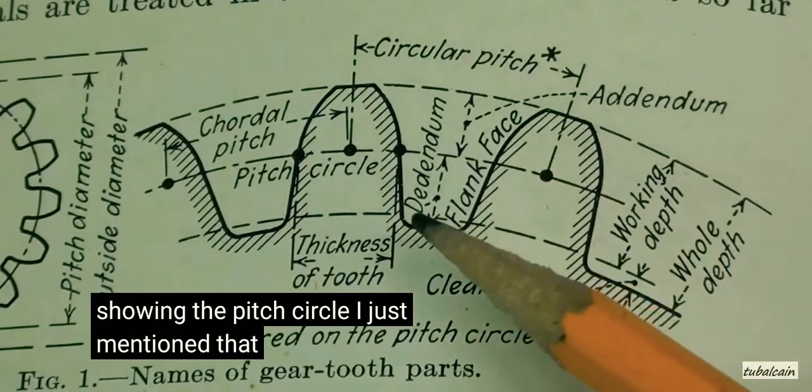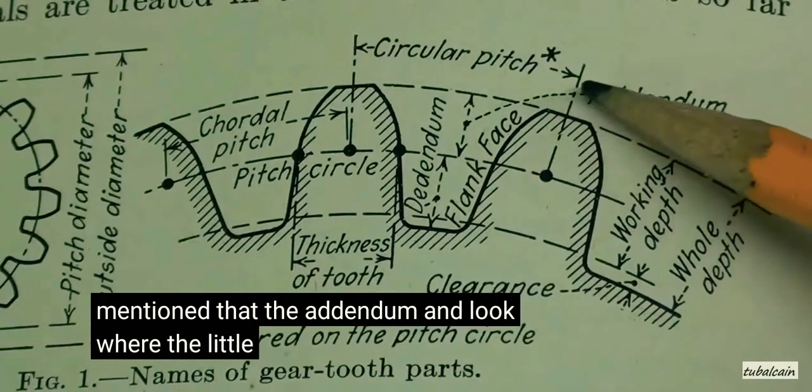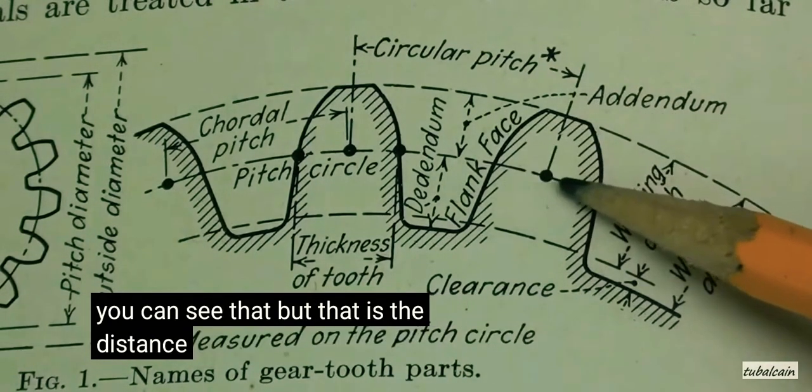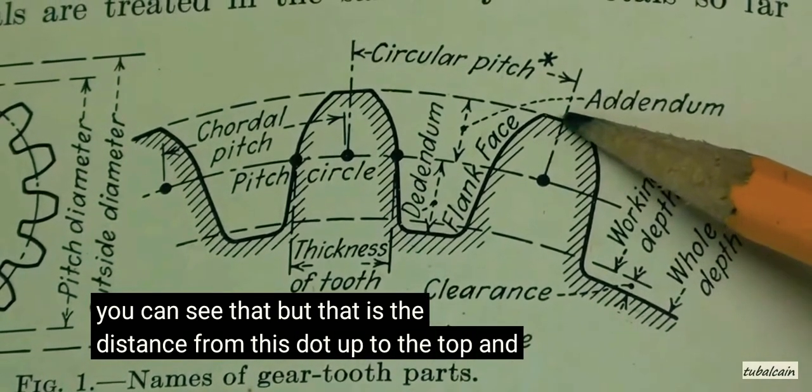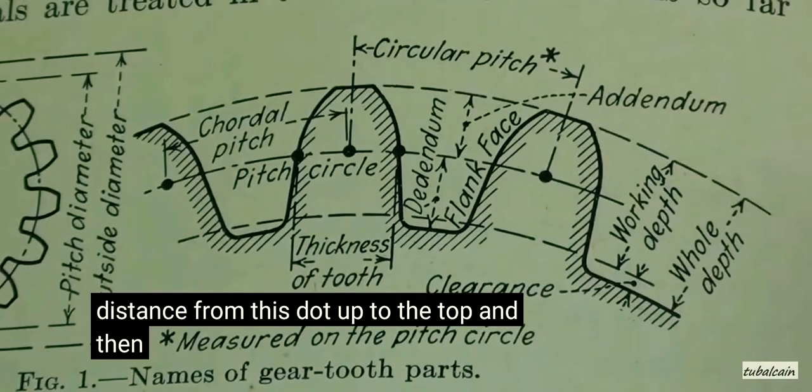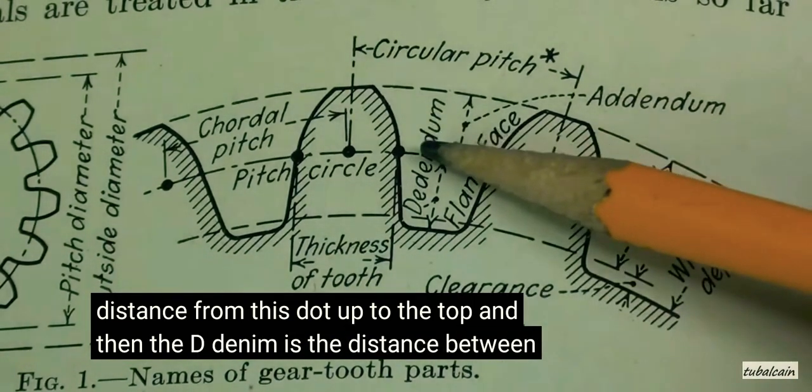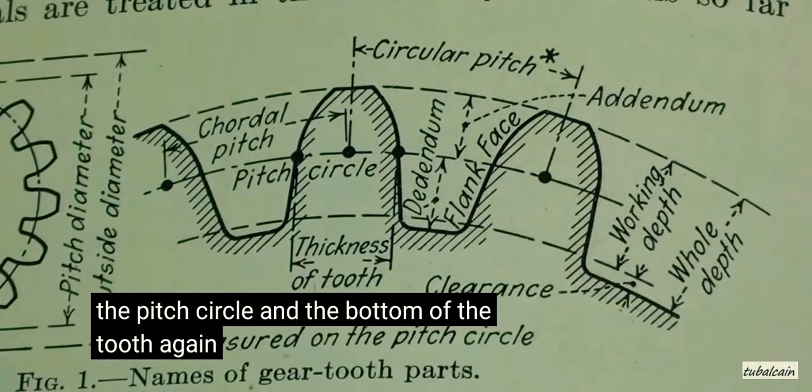I just mentioned that. The addendum, and look where the little arrow goes here, I hope you can see that. But that is the distance from this dot up to the top. And then the dedendum is the distance between the pitch circle and the bottom of the tooth.